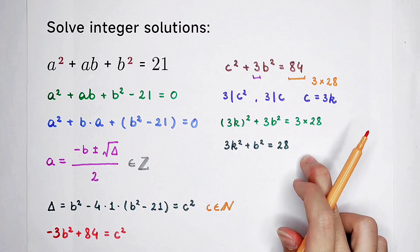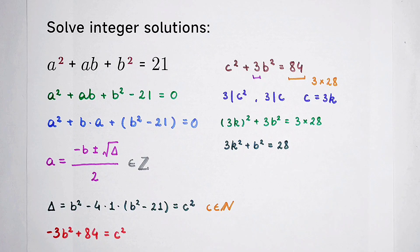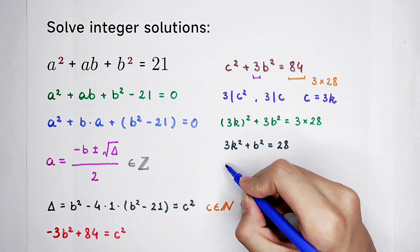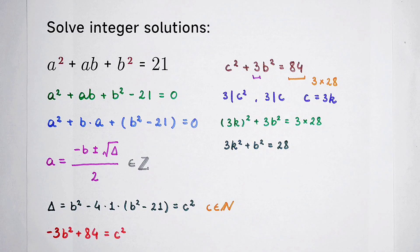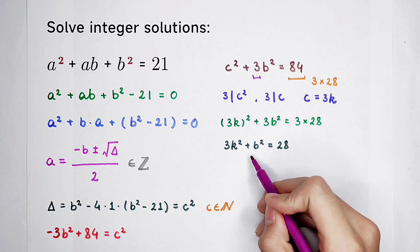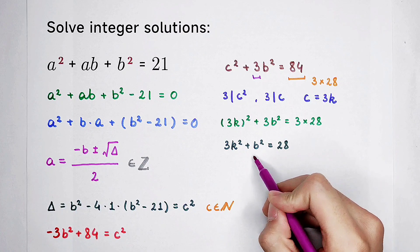We can solve this equation by counting. Yes, of course we can. I prefer analyze it first. Look, 3 times k squared, then plus b squared is equal to 28. We all know that b squared is always non-negative. So, it is greater than or equal to 0.